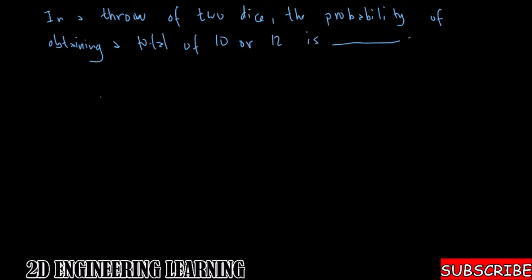We have here another example. In a throw of two dice, the probability of obtaining a total of 10 or 12 is blank. So we need to find the probability in which the result of throwing two dice is a 10 or a 12. That is the gist of the problem.